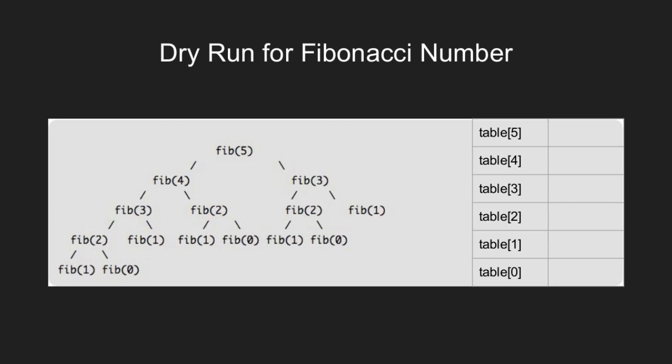Let us see how memoization will work for our Fibonacci number problem that we discussed earlier. First, we initialize all the entries in the lookup table as nil. Next, we call fib5 but table 5 is nil and 5 does not satisfy the base condition. So, fib5 splits the problem and calls fib4.